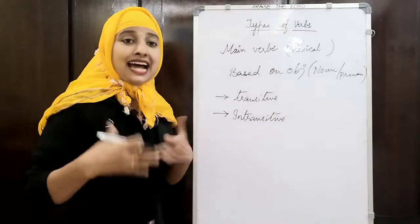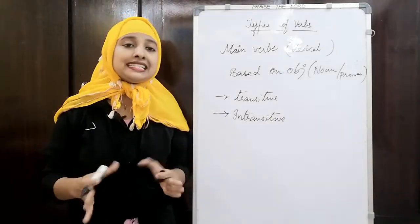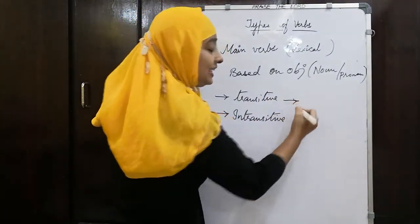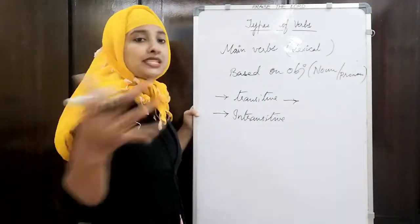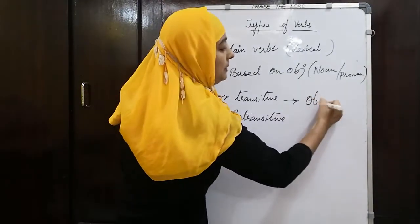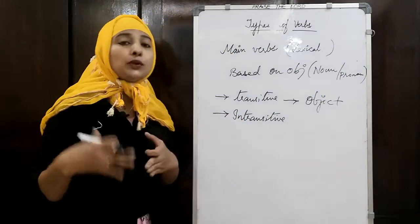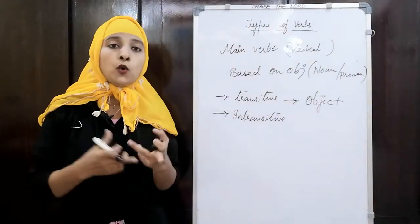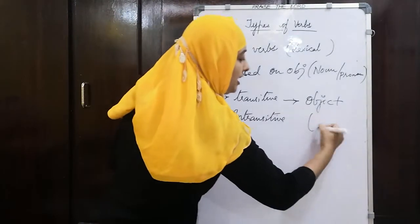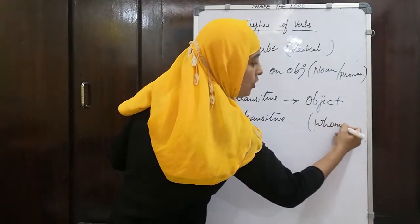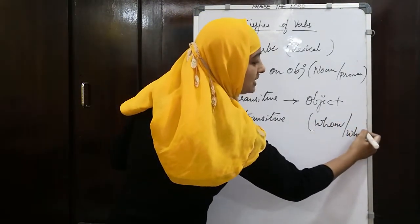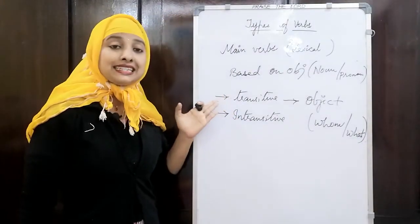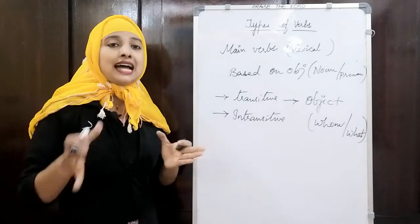Transitive means transfer. It is transferring the action to the object. There will be an object on which the verb is dependent. You can ask a question — whom or what — to the subject to identify the main verb. That is the transitive verb.